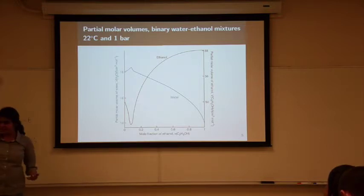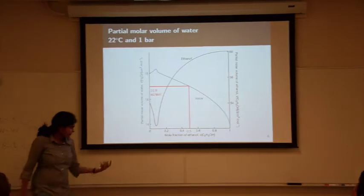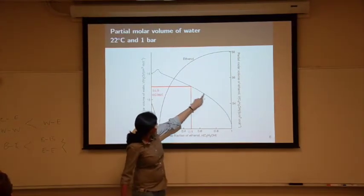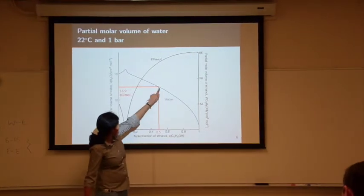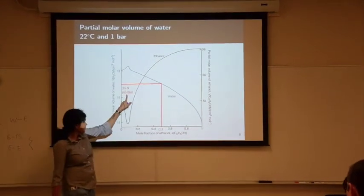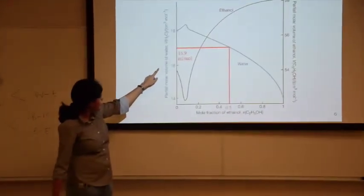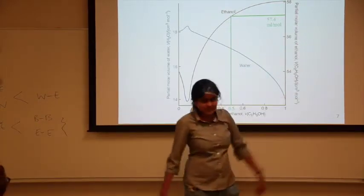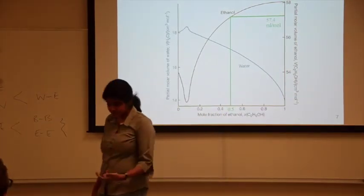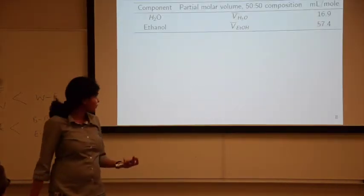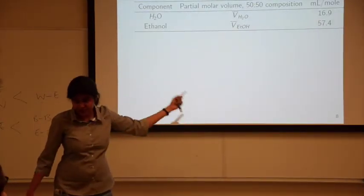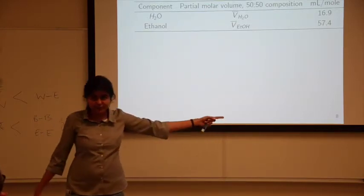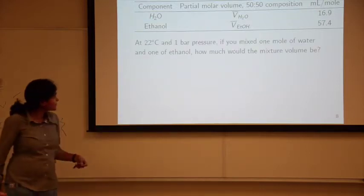For this problem, we can get the partial molar volumes by interpolating this graph. We have a 50-50 mixture. I look at the graph of partial molar volume of water and get 16.9 mL per mole. For ethanol at the same composition, it's 57.4. In the past, we used the pure substance molar volumes for ethanol and water. Now, we're using the partial molar volumes.